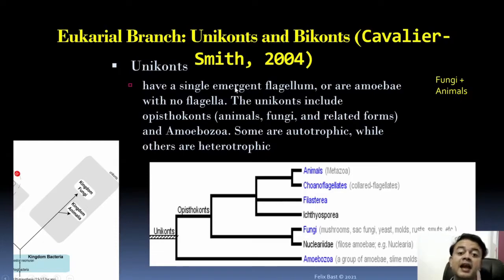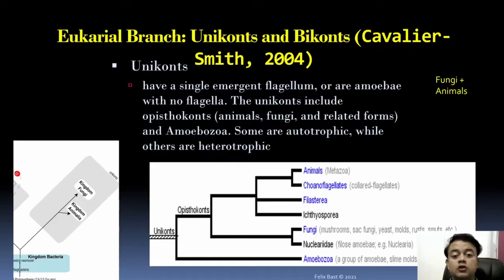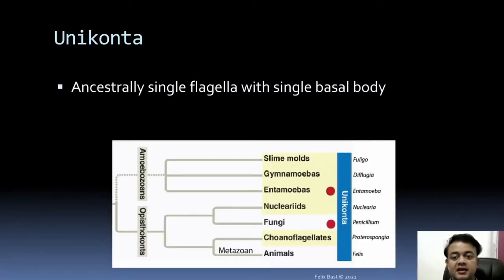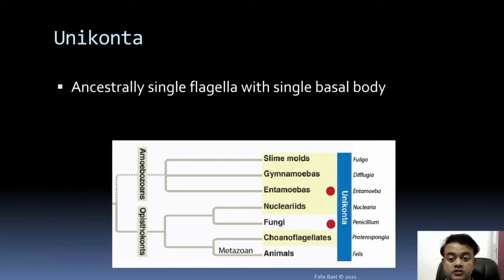Unikonts — which include fungi and animals — have a single emergent flagellum or amoebae with no flagella. Unikonts include Opisthokonta, which covers animals, fungi, and related forms, and Amoebozoa. Some amoebae are autotrophic while others are heterotrophic, though heterotrophy is more prevalent. The defining synapomorphic trait of Unikonts is ancestrally a single flagellum with a single basal body.